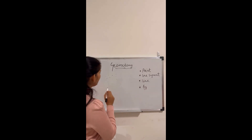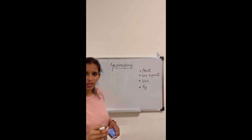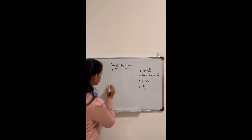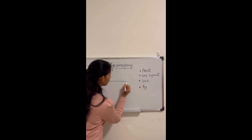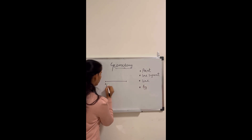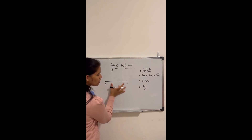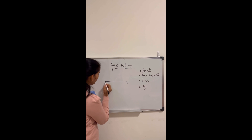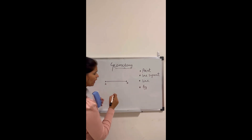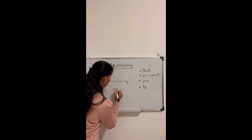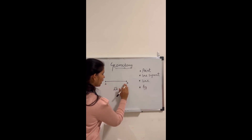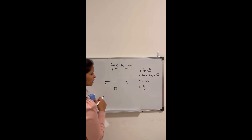The next thing is a line segment. A line segment is a collection of points. Suppose I have two dots and I join them — there is a line between point A and point B. This is called a line segment because it has one start point and one end point, and we can measure it. We write it as line segment AB.